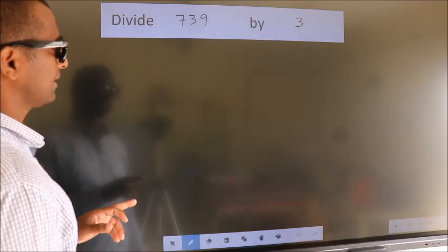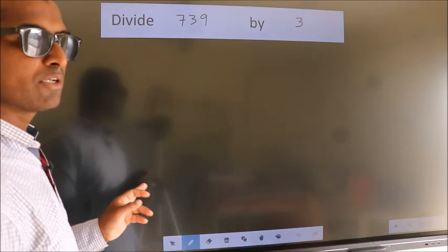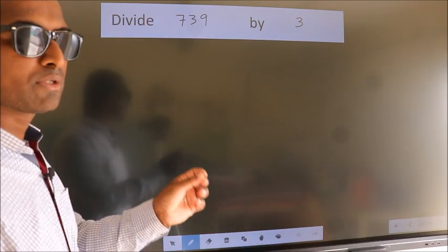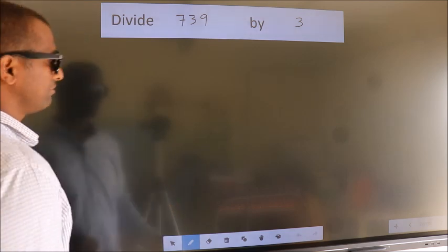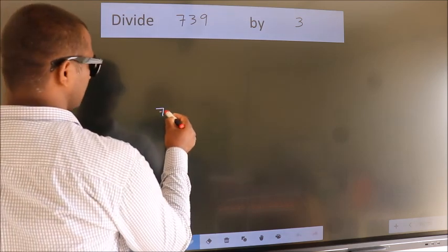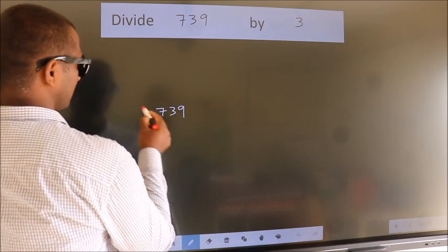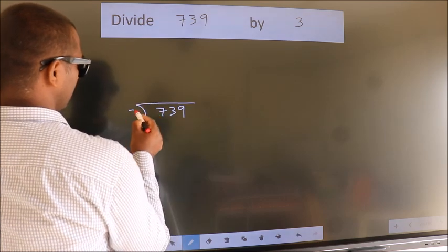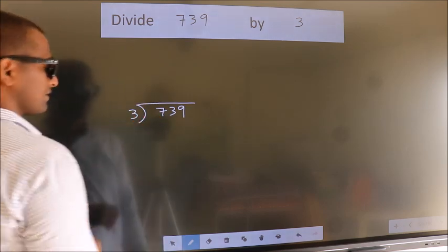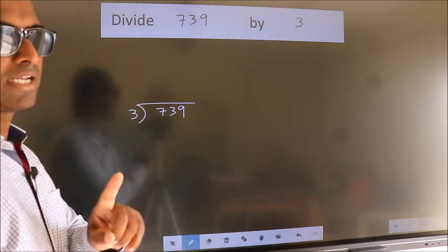Divide 739 by 3. To do this division we should frame it in this way. 739 here, 3 here. This is your step 1.